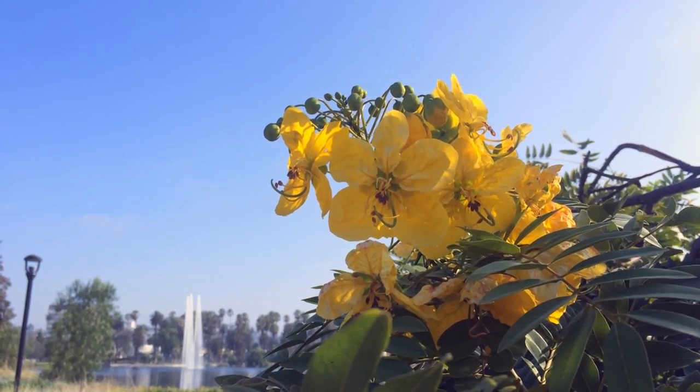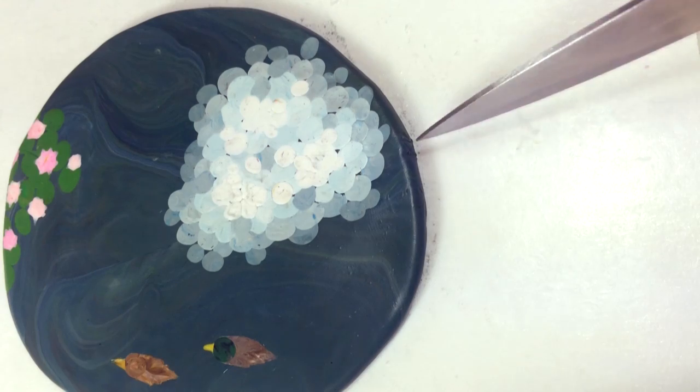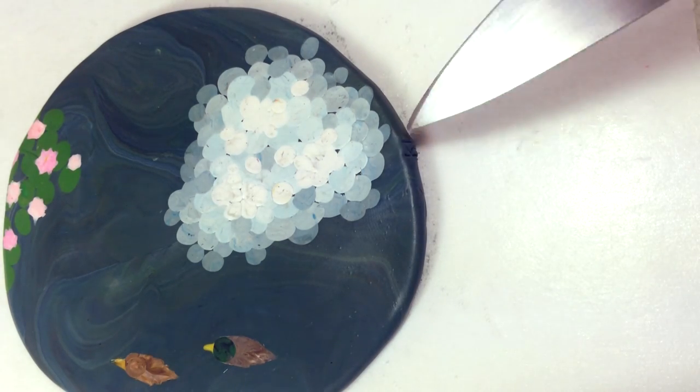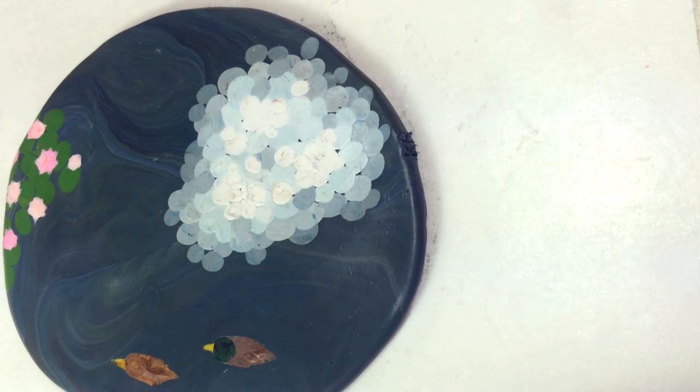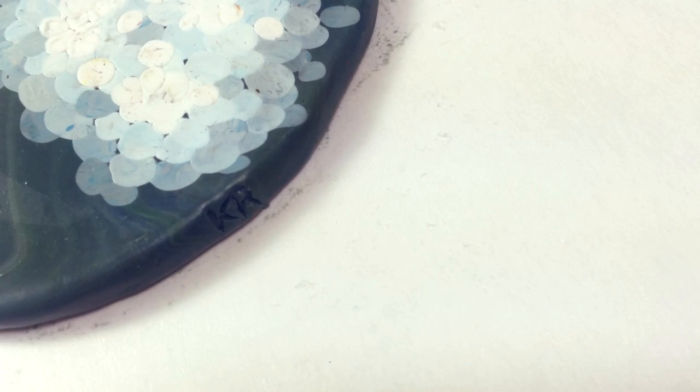There's other flowers in Echo Park too, but the lotuses are the most famous. Then I sign it on the side with a knife because I didn't feel like flipping it over, and then I cook it in the oven for a half hour.